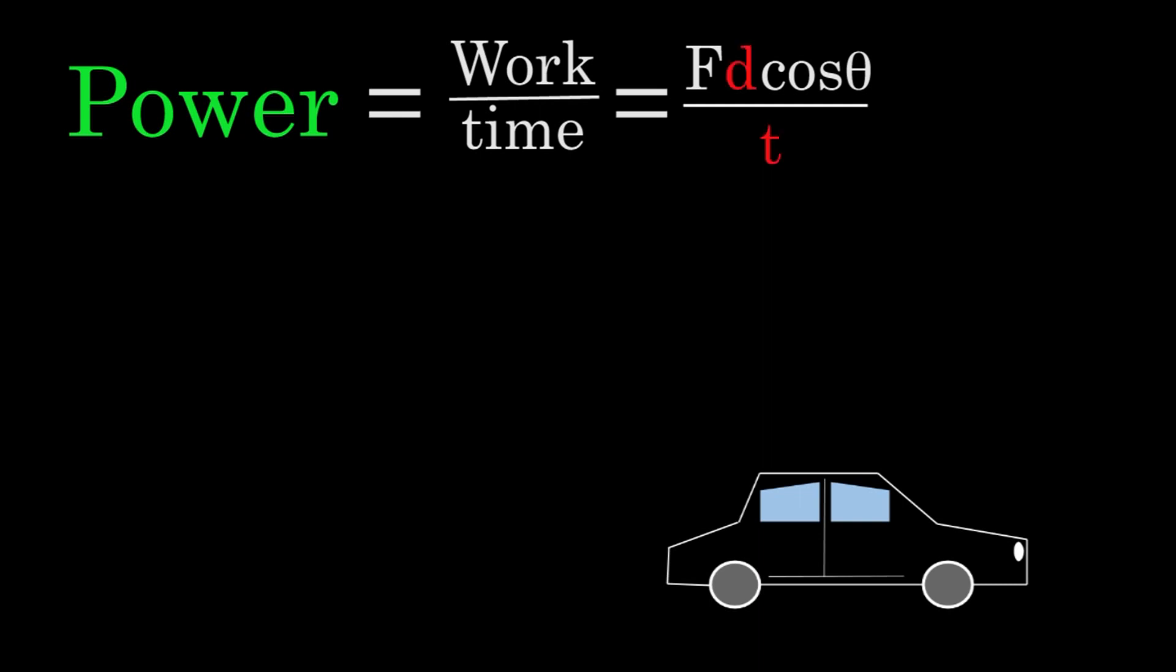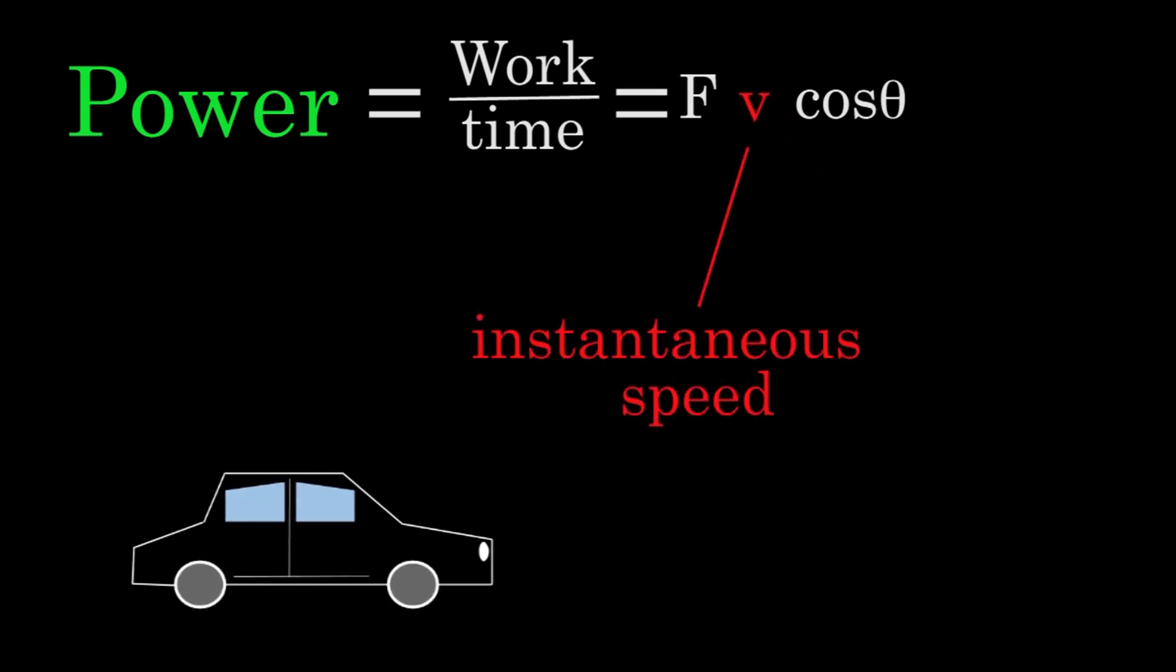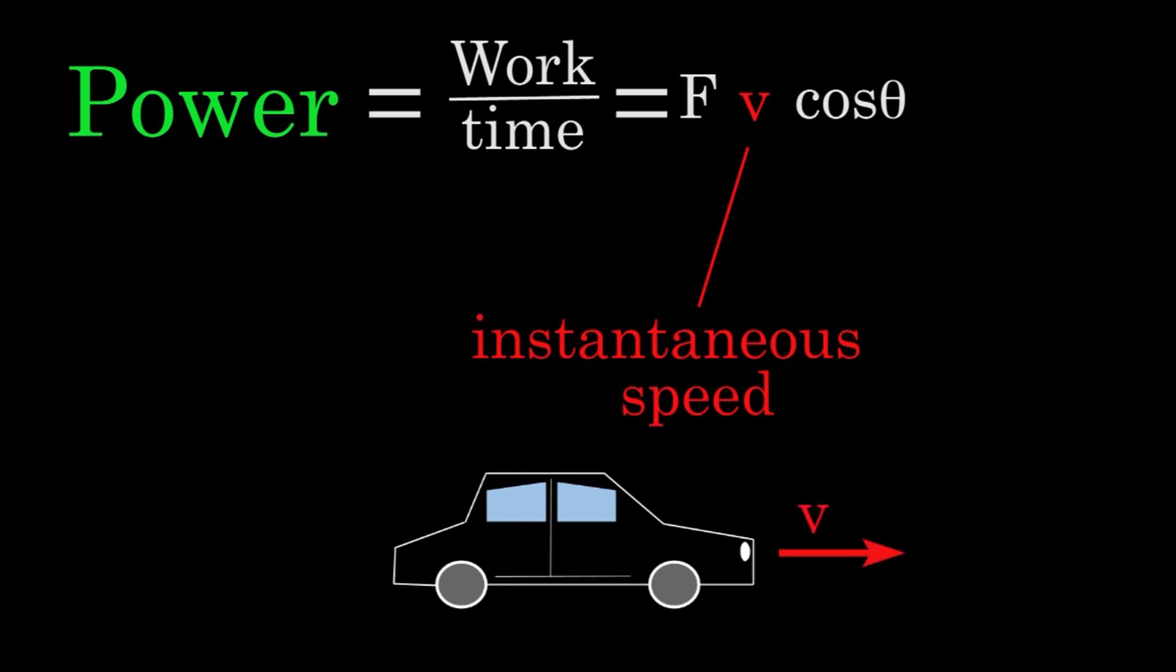Something that you might notice is that now we have distance per time in this formula. So let's isolate the distance per time. Distance per time is just the speed. So I can replace d over t with v in this formula. And if you plug in the instantaneous speed of the car at a given moment in time, you'll be finding the instantaneous power output by the force on the car at that particular moment in time.